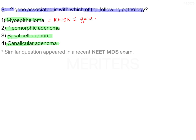Pleomorphic adenoma is a benign salivary gland tumor which is very common. It is associated with the PLAG1 gene — the putative pleomorphic adenoma gene — and it is mapped to chromosome 8q at location 12, which is what is asked in the question.